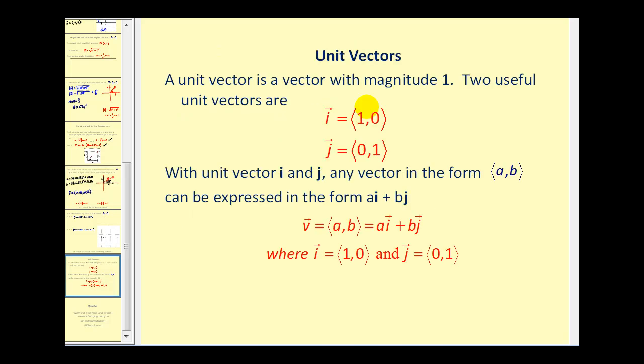A unit vector is a vector with magnitude 1. Two useful unit vectors are vector i, which is equal to ⟨1, 0⟩, and vector j, which is equal to ⟨0, 1⟩. With unit vectors i and j, any position vector in this form can be expressed as ai + bj. We can express any position vector in two different forms.